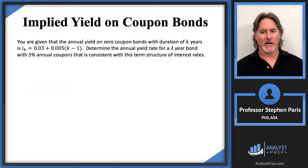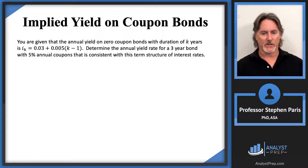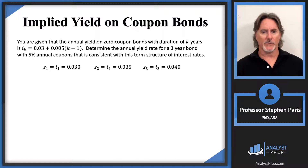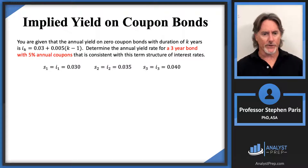Let's go back to our problem and pluck out some of the spot rates. The one-year spot rate: plug in k=1 into the I sub k expression — that gives 3%. The two-year spot rate: plug in k=2 — that gives 3.5%. Likewise, the three-year spot rate is 4%. That's all I need because the problem asks for the annual yield for a three-year bond, so I don't need to go beyond the three-year spot rate.